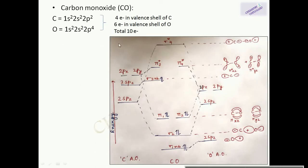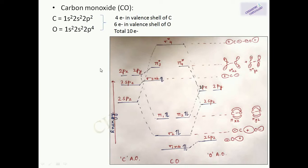The first example is carbon monoxide. In carbon monoxide, carbon has 1s2, 2s2, 2p2 electronic configuration while oxygen has 1s2, 2s2, 2p4. So the total number of electrons in the valence shell of CO is 10.